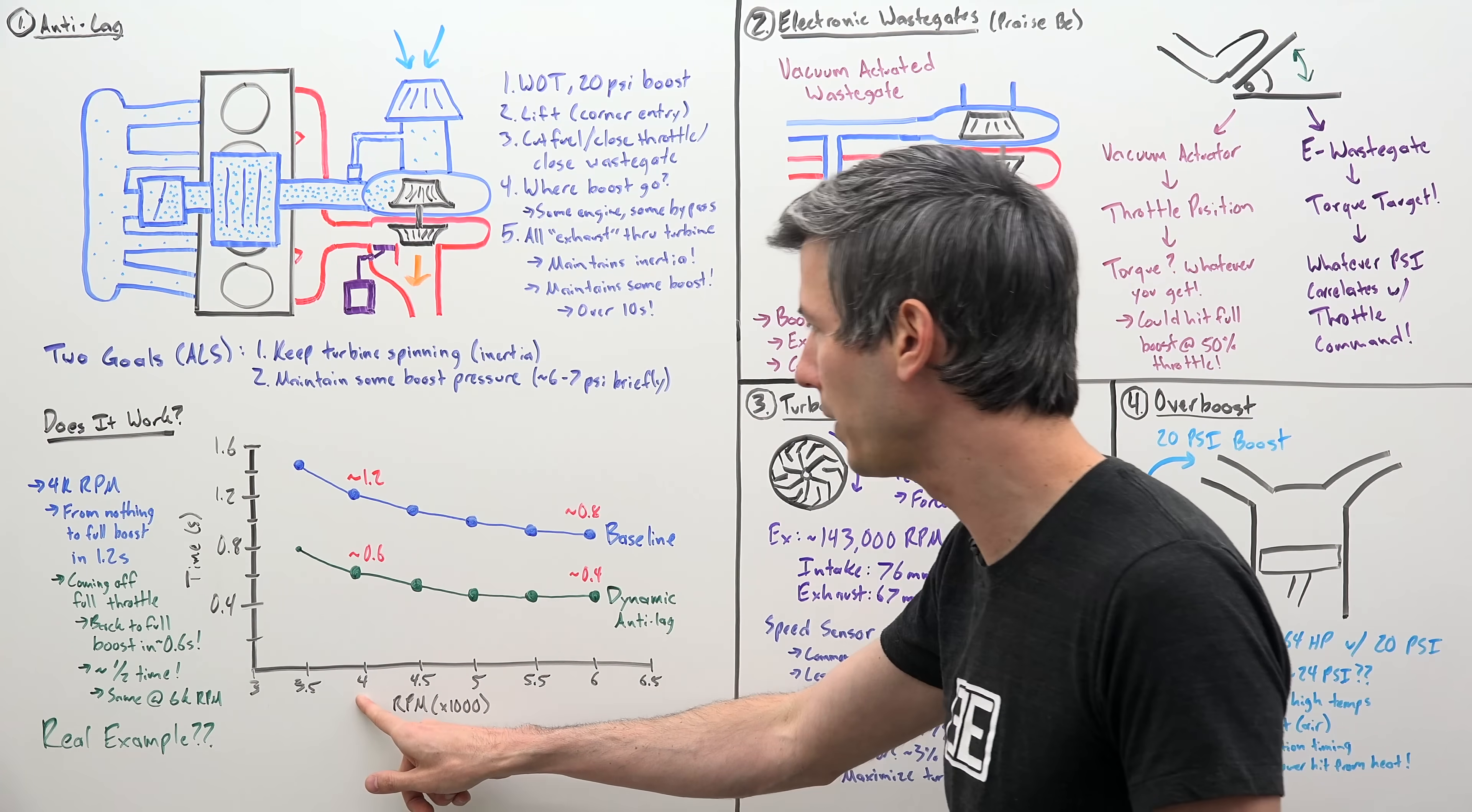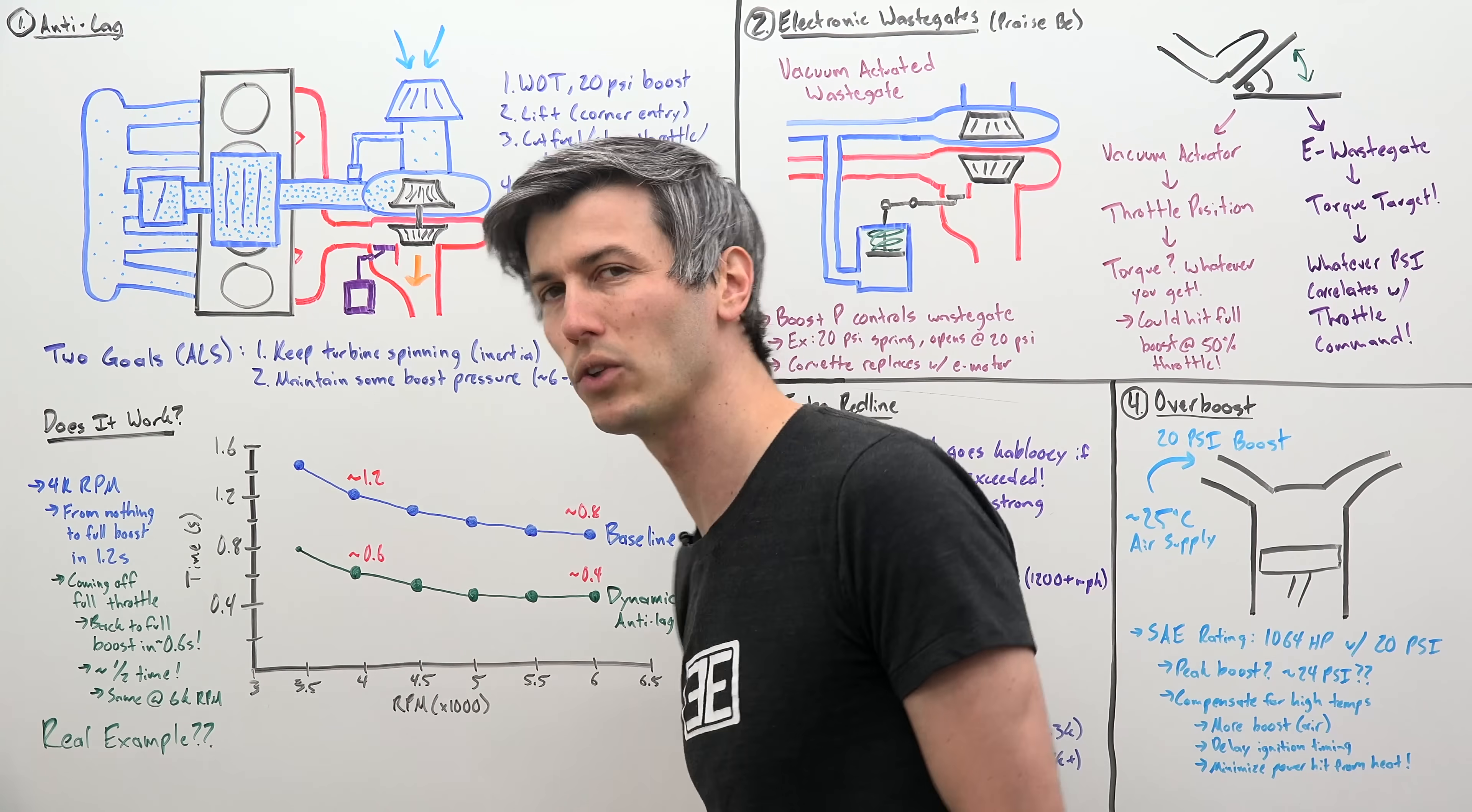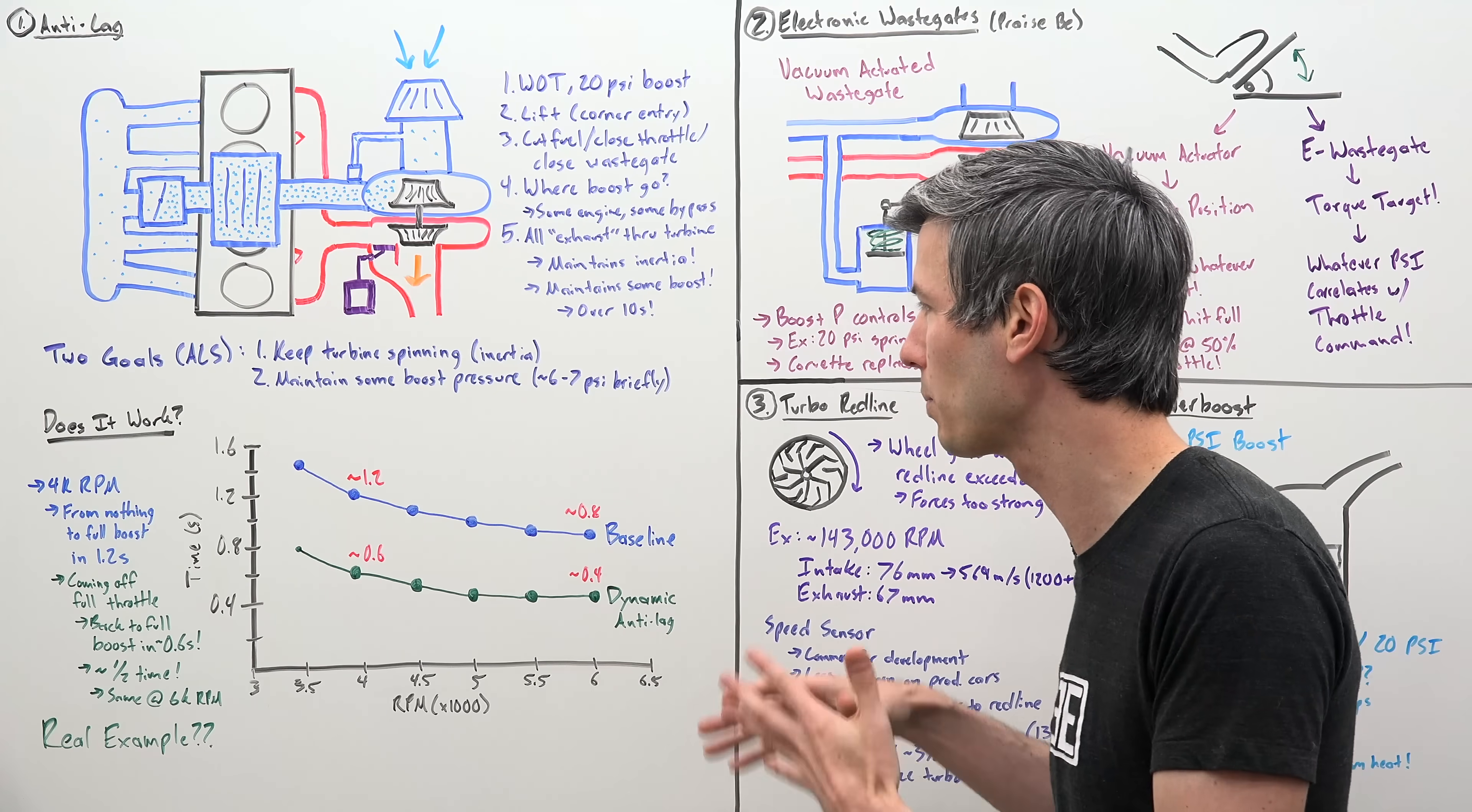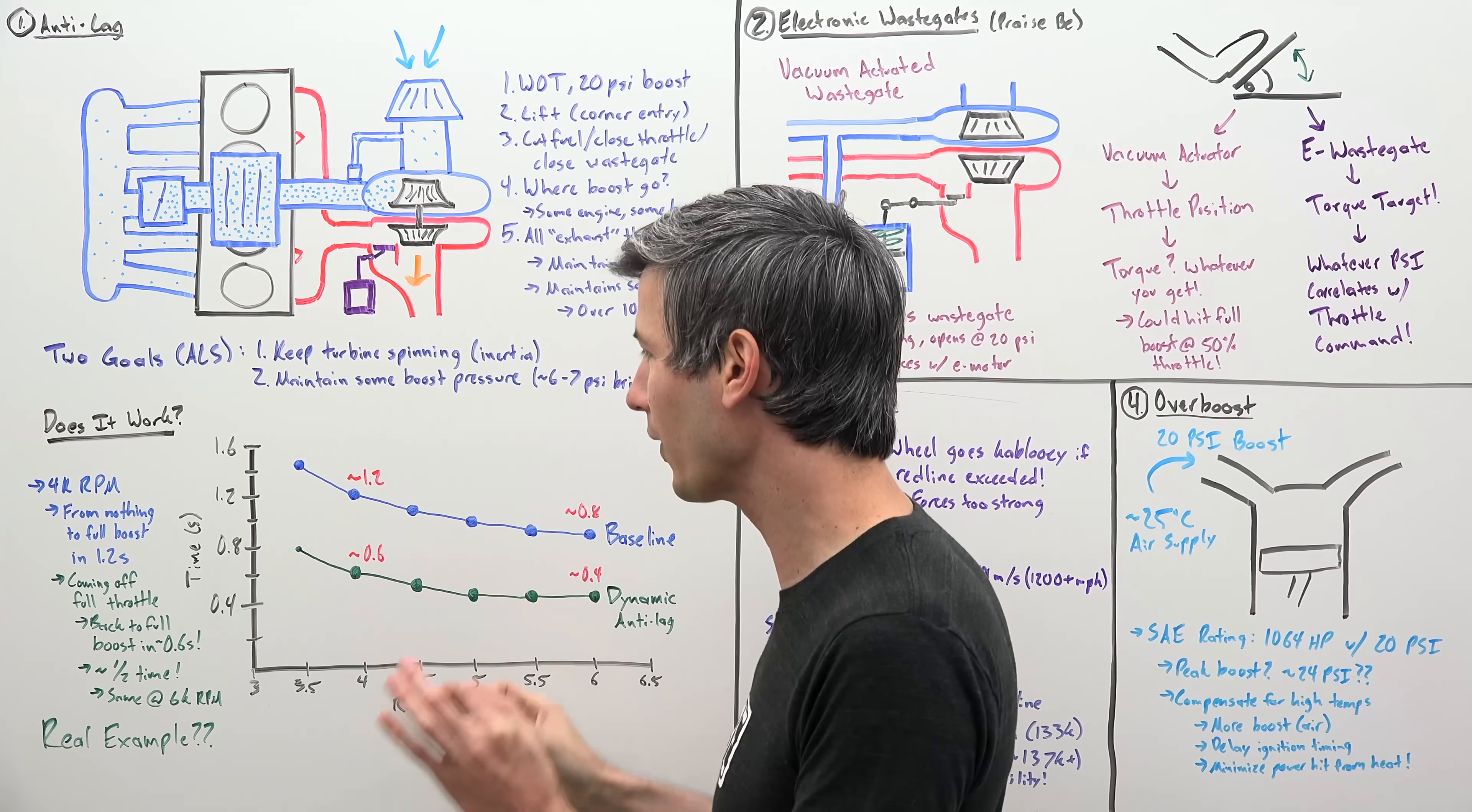Well, if you're at 4,000 RPM, that's 1.2 seconds baseline versus using the anti-lag system, it only takes 0.6 seconds. So about half the time to reach peak boost if you're in a scenario where you can take advantage of anti-lag. Very cool.